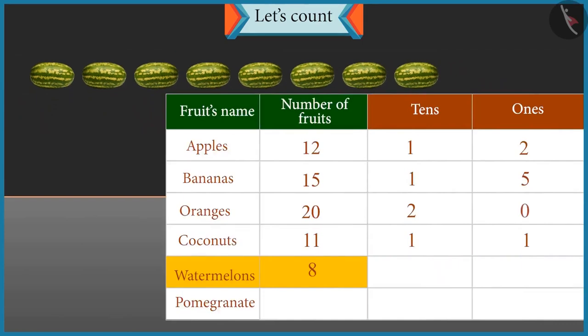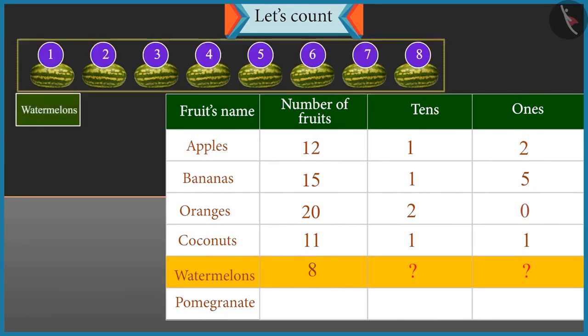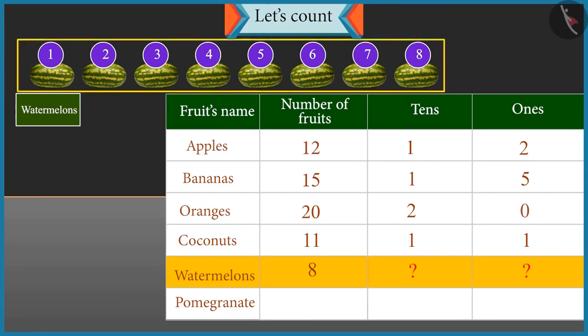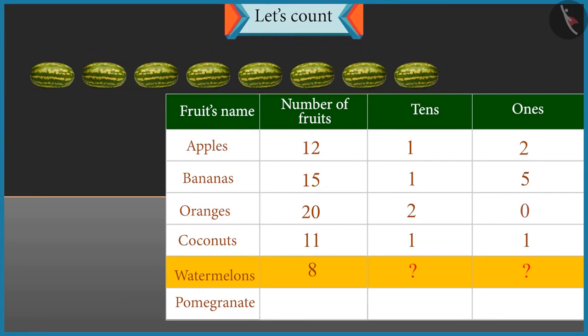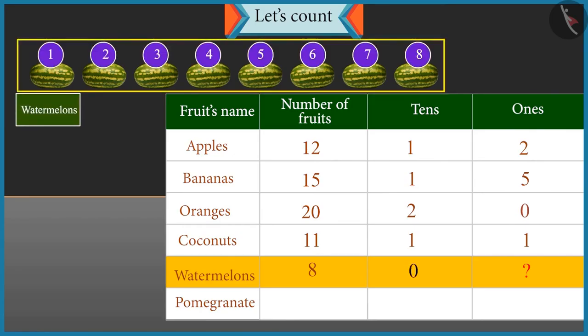So how many tens and ones are there in eight? There are only eight watermelons, so we cannot form any group of ten. So there is zero tens and eight ones.